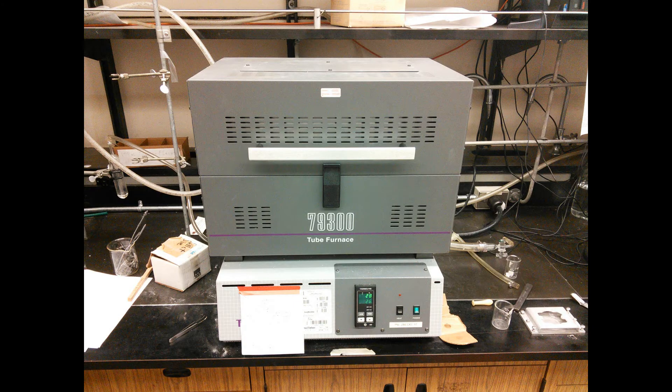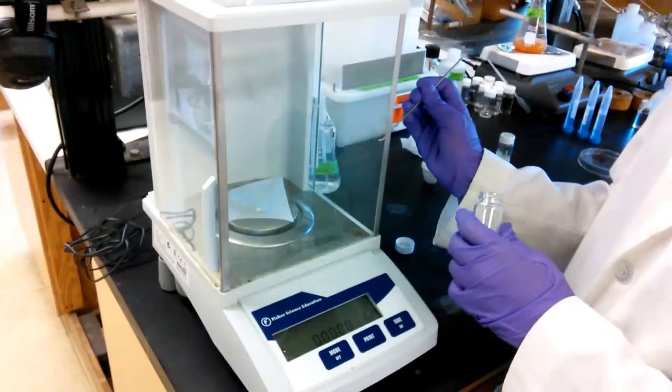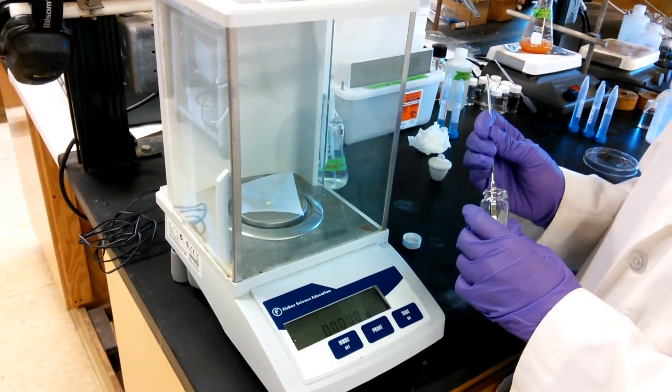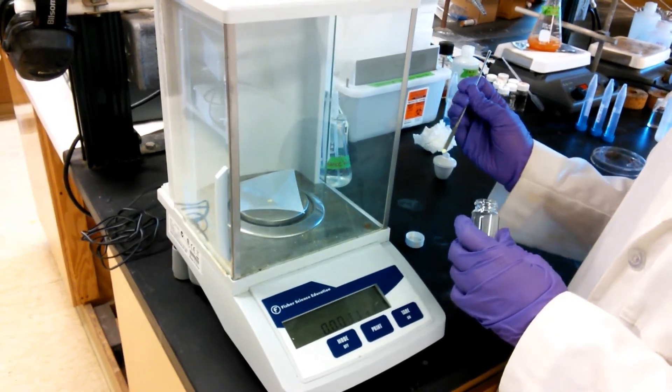Tungsten oxide powder is then placed in a tube furnace at 500 degrees Celsius for 2 hours. The necessary amount of tungsten oxide is weighed and dispersed into a sulfuric acid solution with a pH of 3.5.